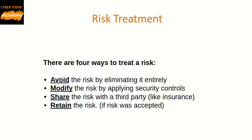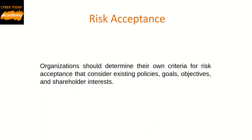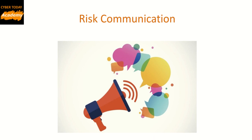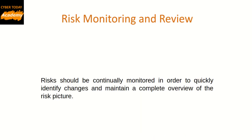The fourth key is risk acceptance. Organizations should determine their own criteria for risk acceptance, considering existing policies, goals, objectives, and shareholder interests. The fifth key is risk communication and consultation — communicating the risks and how they are to be mitigated. The sixth and last key is risk monitoring. Risks should be continually monitored in order to quickly identify changes and maintain a complete overview of the risk picture.